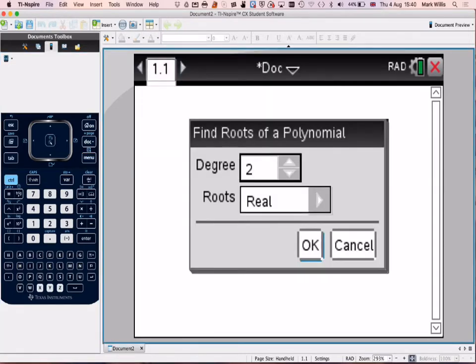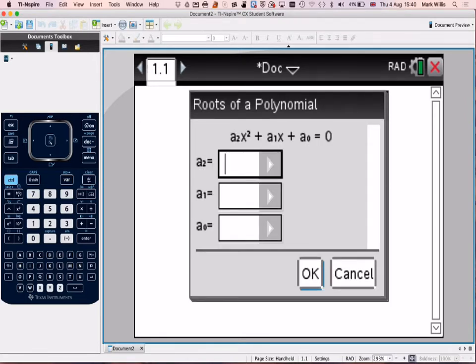Just leave it as it is. Degree 2 means it's a quadratic, so by default it comes up like that, and that's all you will need at math studies, and real by default. Press OK, and then we need to put in the numbers.